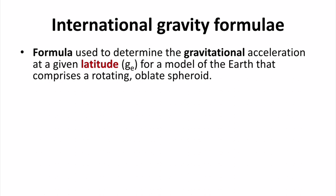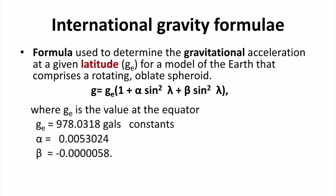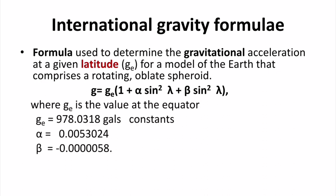Next is the international gravity formula. This will be used in numerical problems — for a particular latitude we use this formula: g = g_e (1 + α sin²λ + β sin²2λ), where g_e is the value of gravity at the equator. You will be given the latitude value, as seen in the GATE exam. There are some constants you have to remember: the values of g_e, α, and β. Whatever values are given in the exam, you fill them in and calculate the answer.